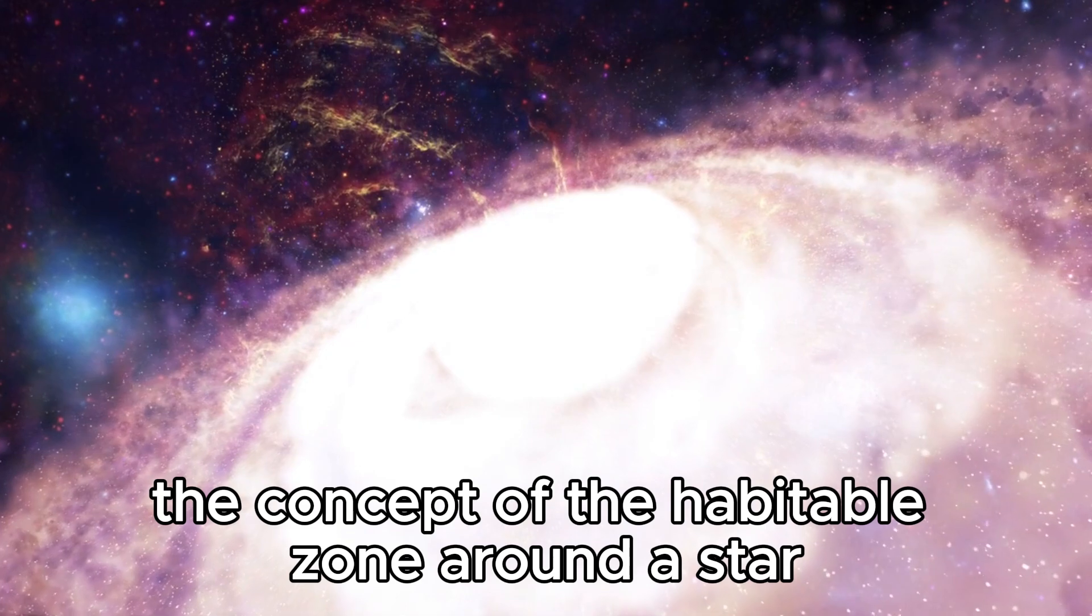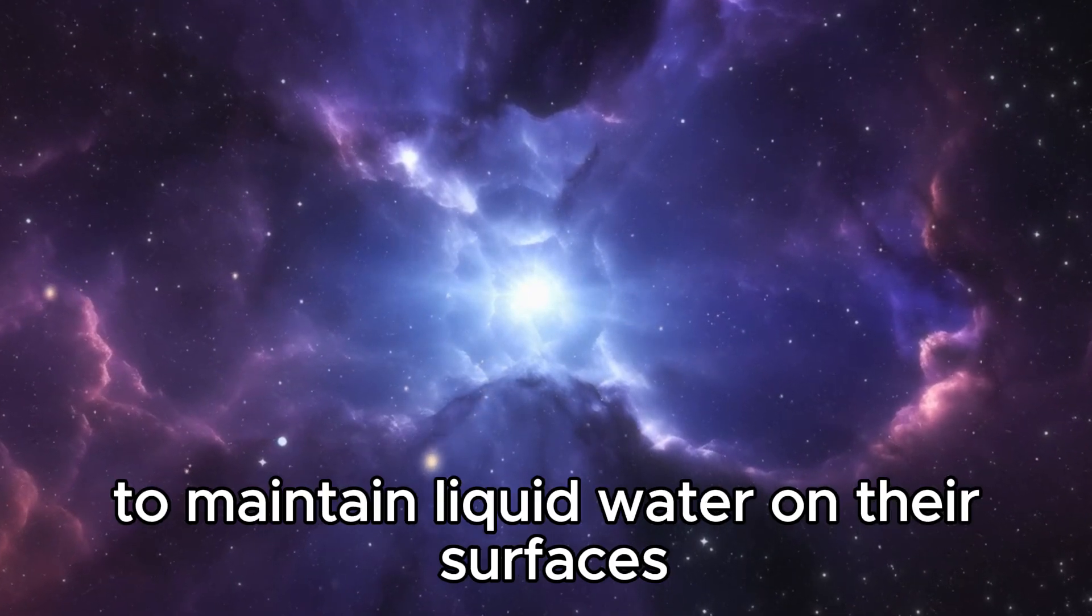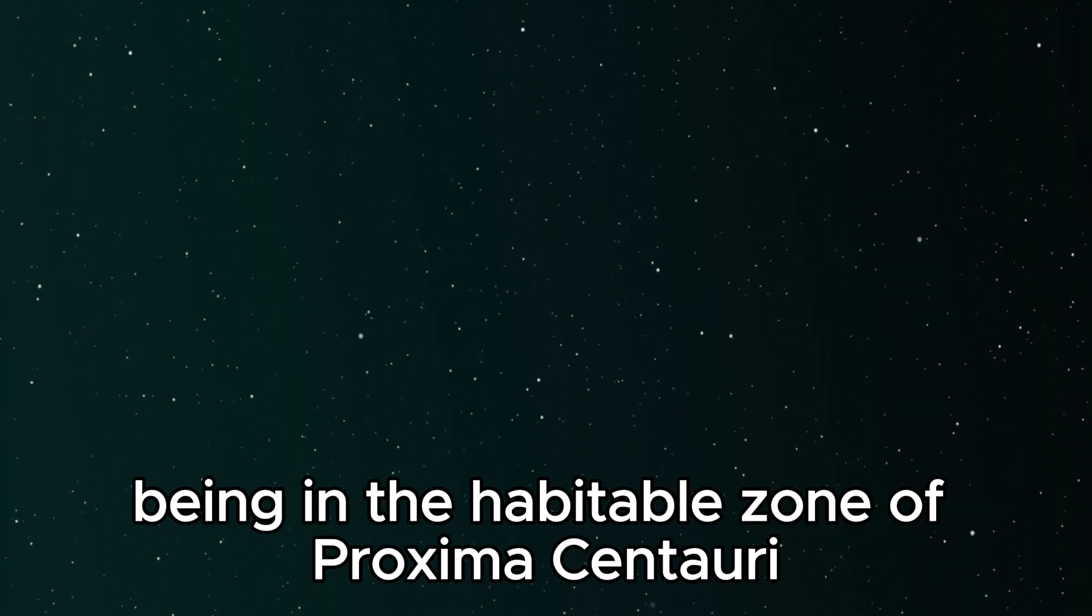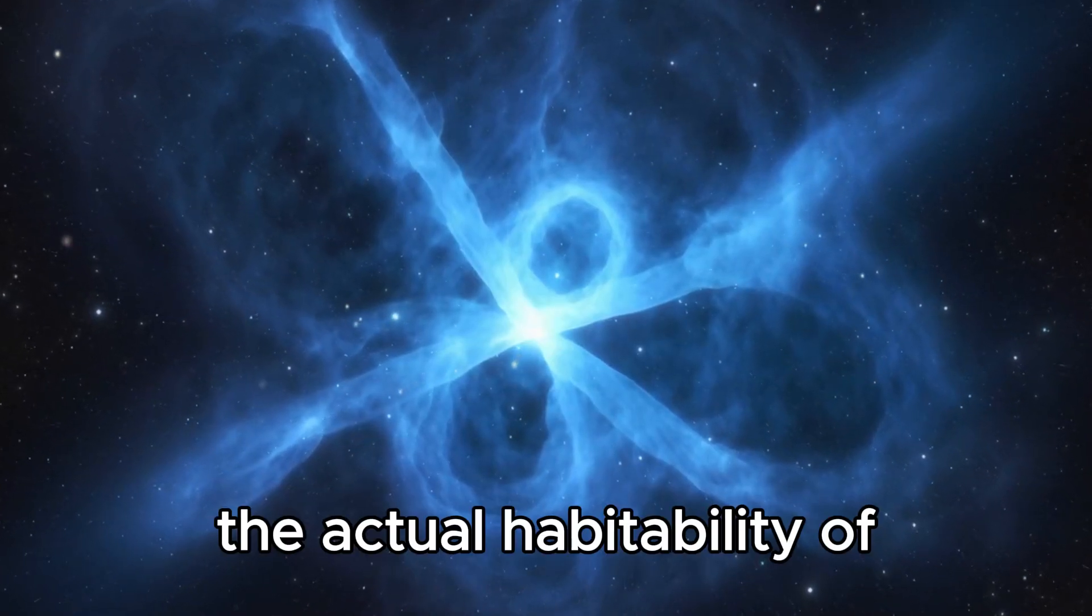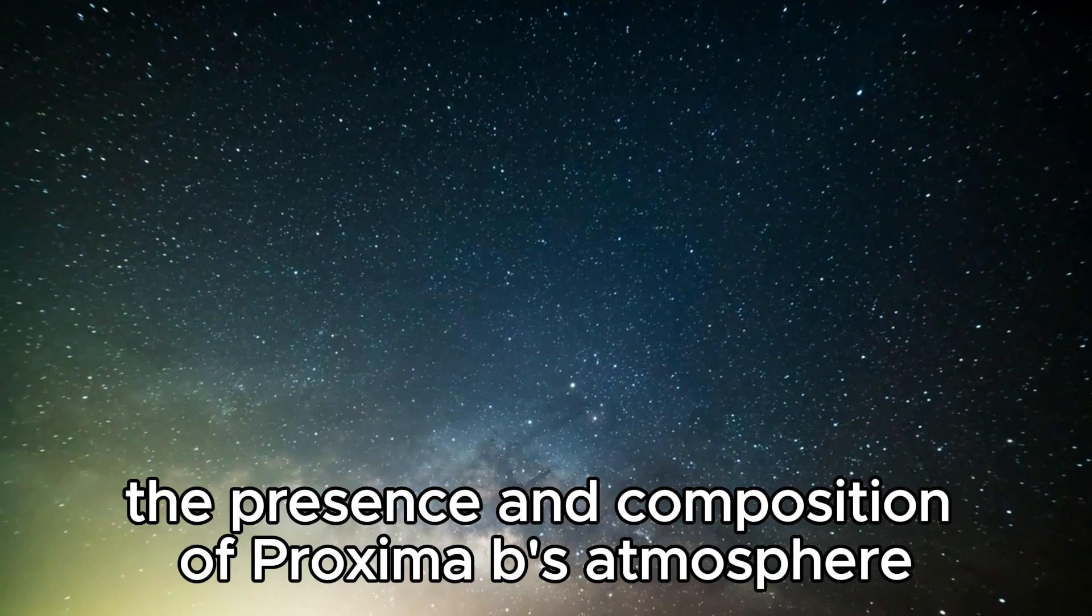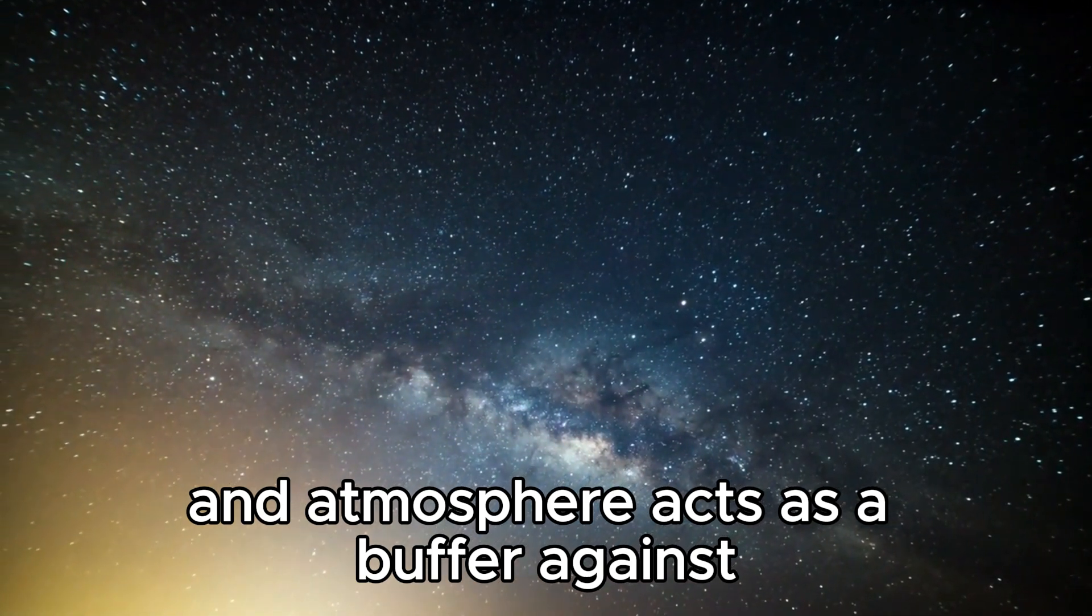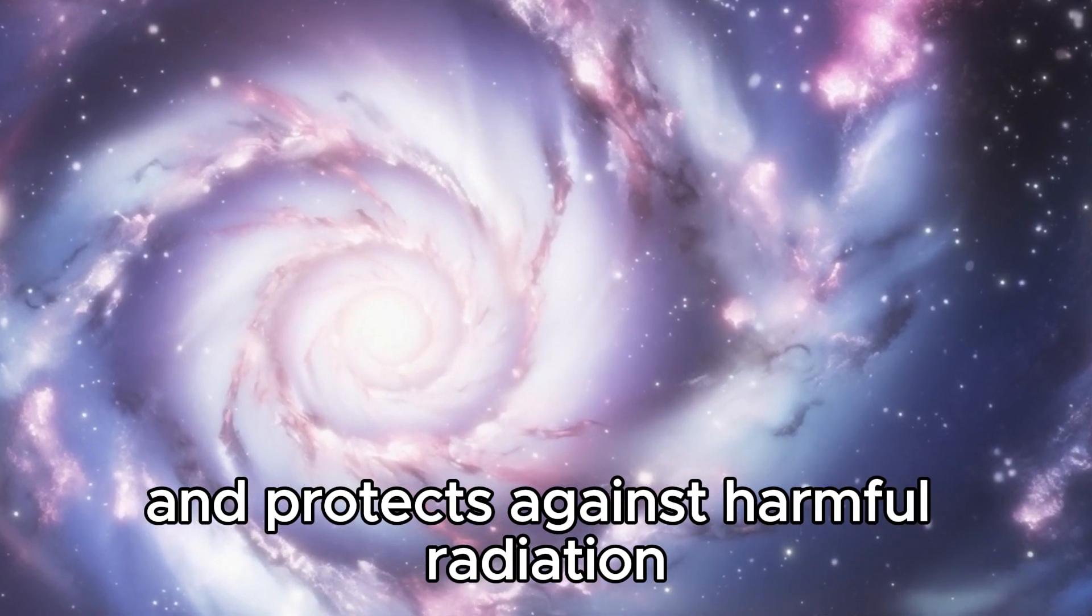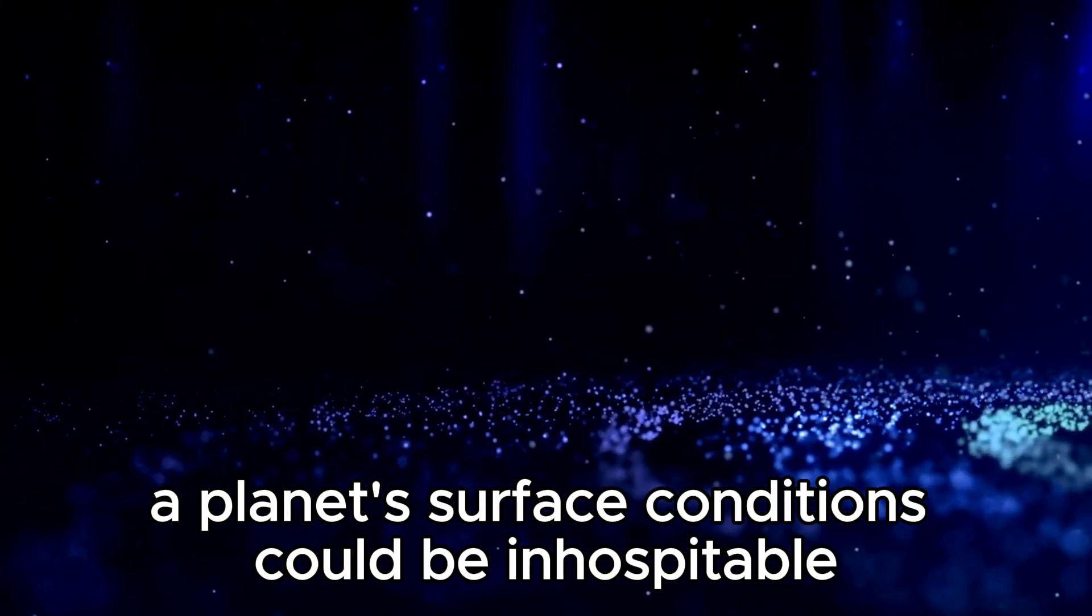The concept of the habitable zone around a star is based on the idea that planets within this zone receive just the right amount of stellar radiation to maintain liquid water on their surfaces. For Proxima b, being in the habitable zone of Proxima Centauri suggests that, under favorable conditions, liquid water could exist. However, the actual habitability of the planet depends on various factors beyond just its orbital distance. The presence and composition of Proxima b's atmosphere are crucial determinants of its habitability. An atmosphere acts as a buffer against extreme temperatures, regulates the greenhouse effect, and protects against harmful radiation. Without a sufficient atmosphere, a planet's surface conditions could be inhospitable to life as we know it.